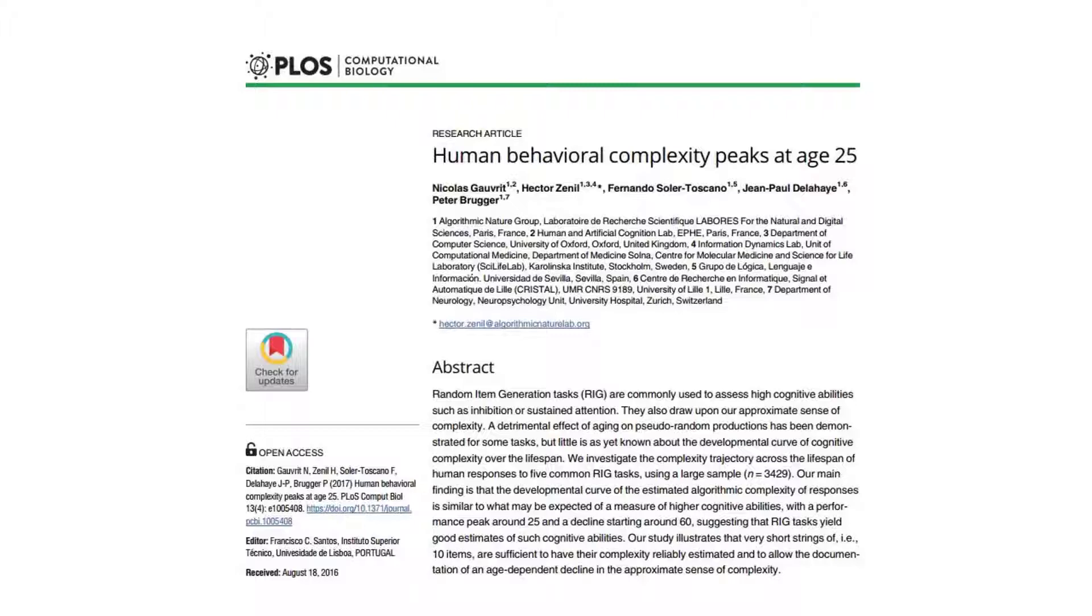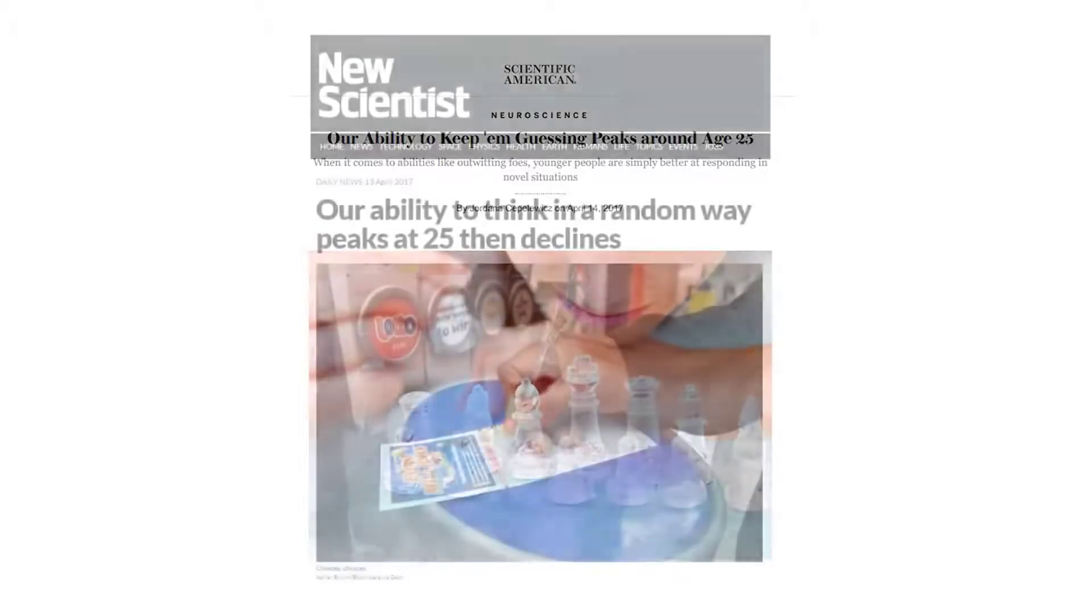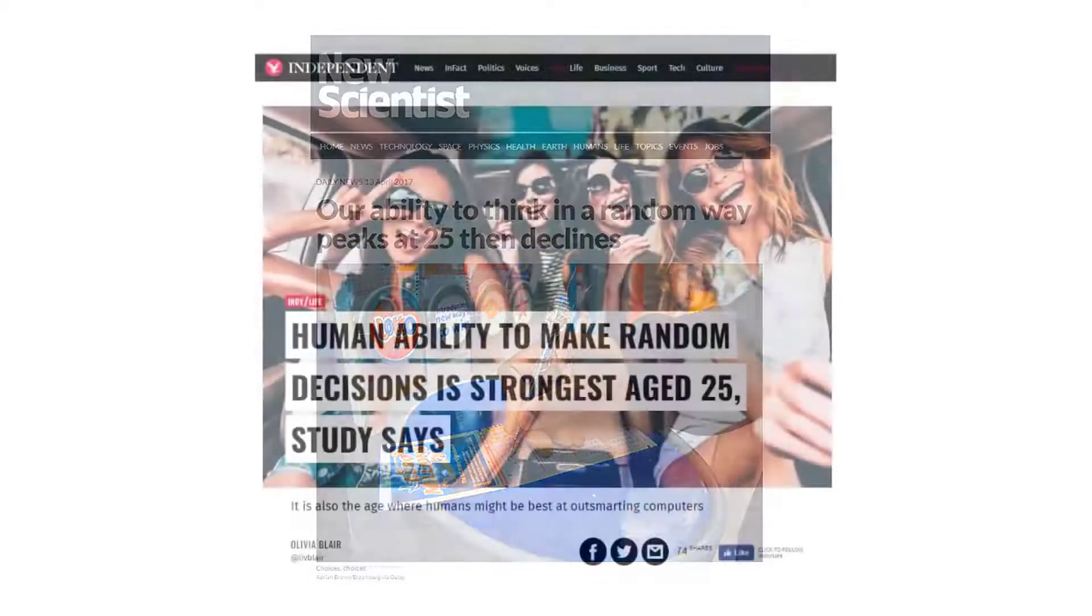For example, by using these tools, we have shown that the human mind is best equipped to produce randomness when we reach the age of 25.